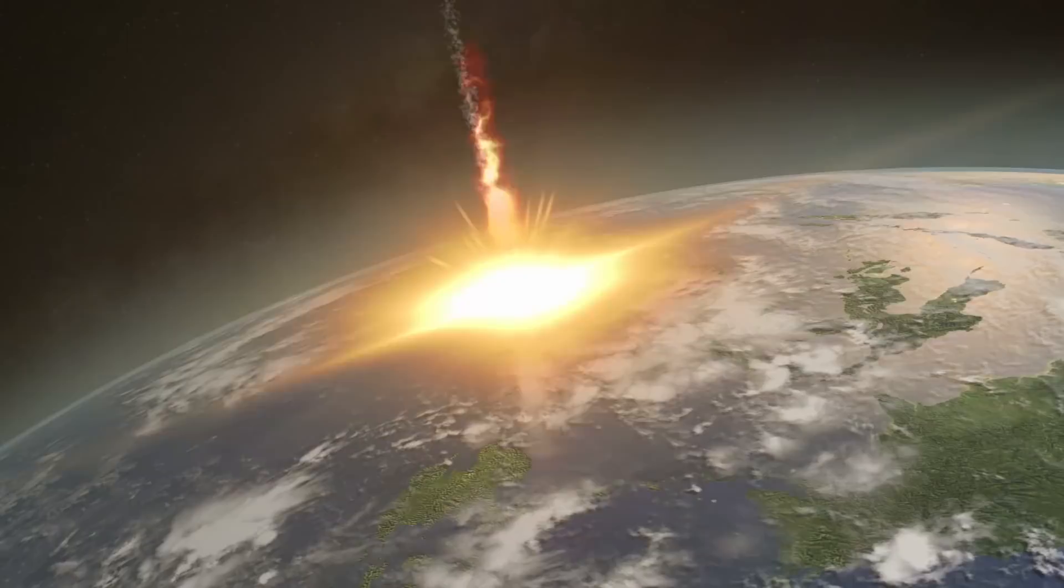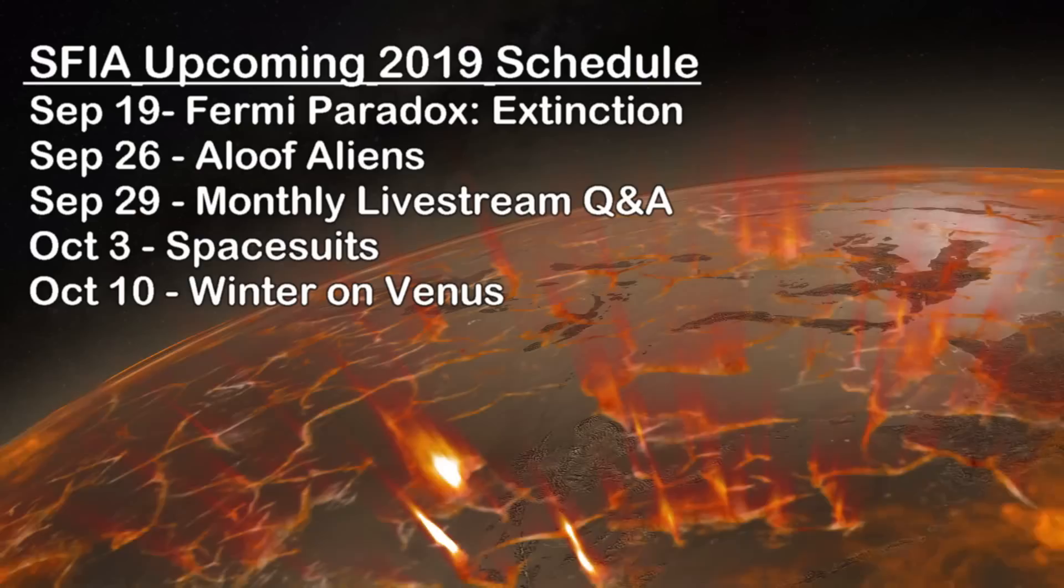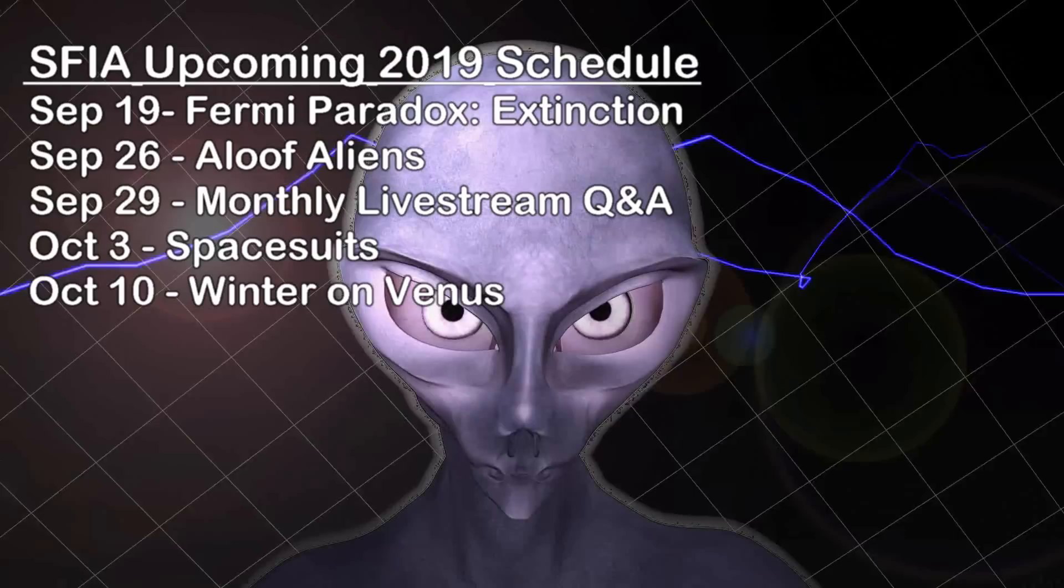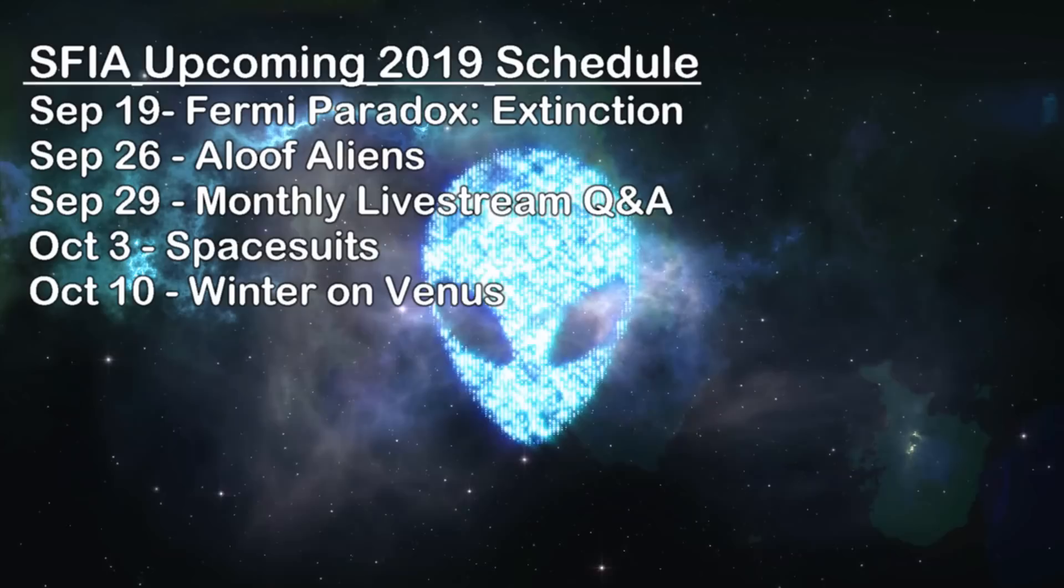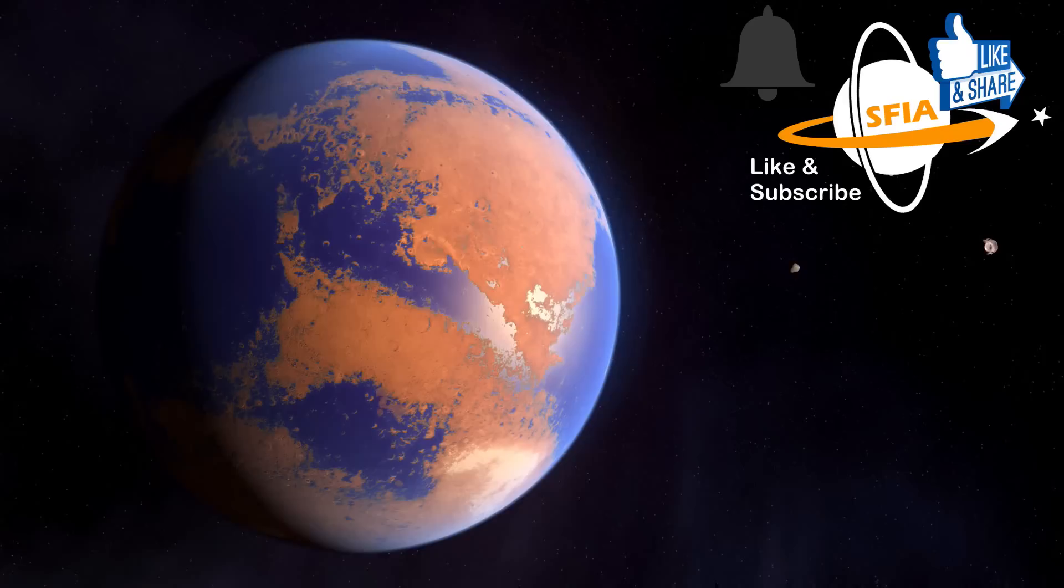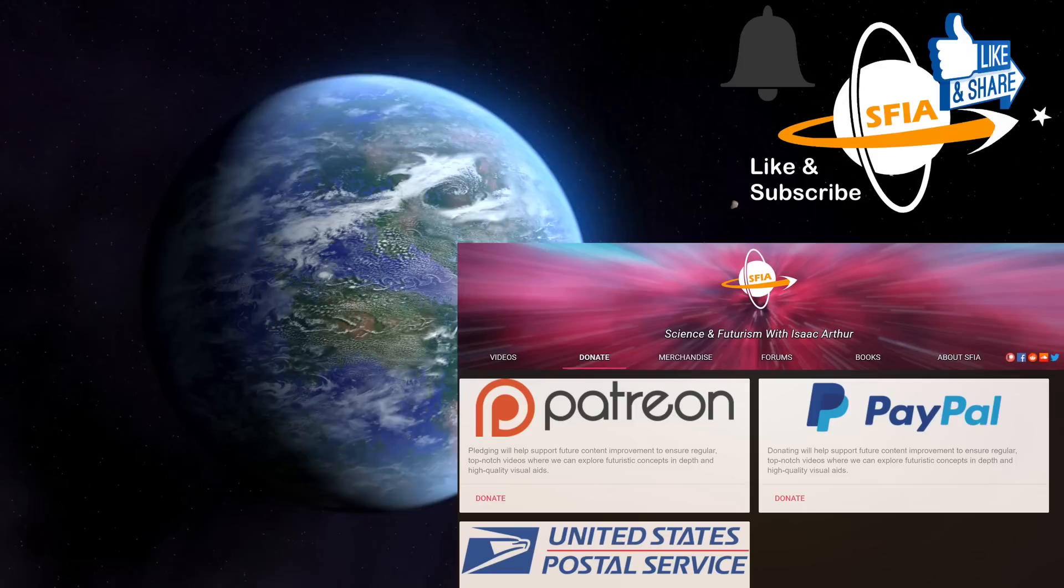So next week we'll be celebrating SFIA's 5th anniversary by returning to one of our favorite topics, the Fermi Paradox, to look at the role that extinction might play in either limiting the number of intelligent civilizations that arise or ending them after they've arisen as galactic players. The week after that we'll return to the Alien Civilization series to look at the popular concept of ascended aliens or other examples where an advanced civilization might simply lose interest in our universe, or at least its more primitive occupants, in aloof aliens. For alerts when those and other episodes come out, make sure to subscribe to the channel and hit the notifications bell. And if you enjoyed this episode, hit the like button and share it with others. And if you'd like to support future episodes, you can donate to us on Patreon or our website IsaacArthur.net, linked in the video description below. Until next time, thanks for watching and have a great week.